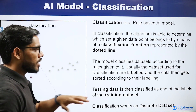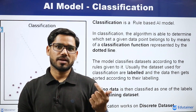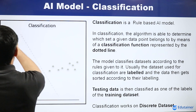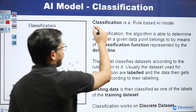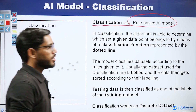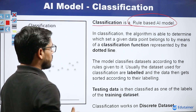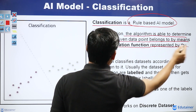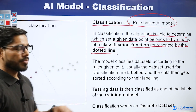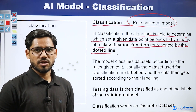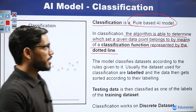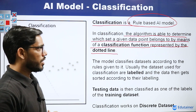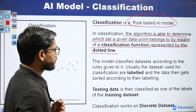The second model is the classification model. Classification is a rule-based AI model, just like regression. In classification, the algorithm determines which set a given data point belongs to, using a classification function represented by a dotted line — unlike regression which uses a solid line. In classification, the dataset is generally a labeled dataset.